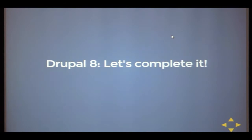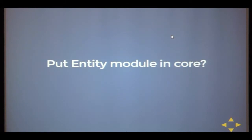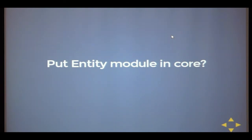In Drupal 8, the idea is that the Entity API is completed in core. The Drupal 7 Entity API module can't really fix things natively — it's an abstraction over things that didn't get solved. For example, when you save entities in Drupal 7 there are various different mechanisms, not one single mechanism. In Drupal 8, the idea is that we don't want abstractions; we want a unique interface and the same API directly in core.